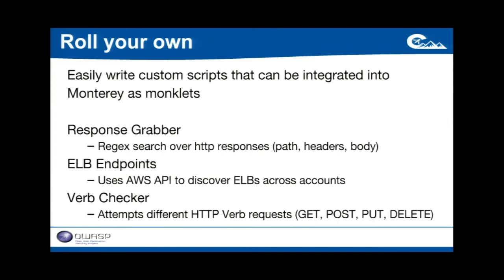Response Grabber is very simple — give it a URL, go to a server, check the response. We look for things in the body: maybe open CORS, maybe paths that shouldn't be accessible from the internet. These can be checked very quickly and are useful for establishing security state. ELB Endpoints is a discovery monklet that goes out and queries all of our ELBs across all of our different AWS accounts, giving us a holistic view of all our different environments. Verb Checker is similar to Response Grabber except it goes out and tries different HTTP methods — like DELETE — on endpoints that maybe shouldn't allow them, giving us a quick continuous check for these particular concerns.